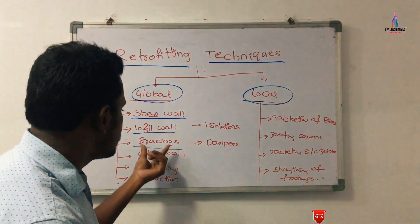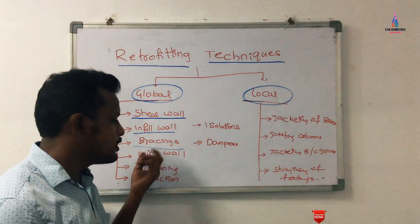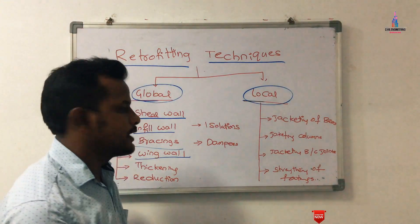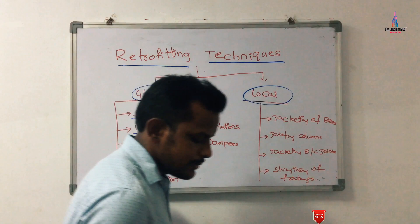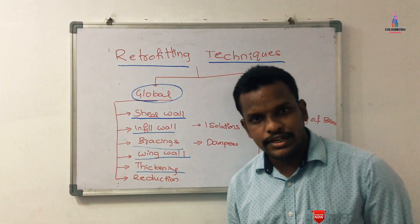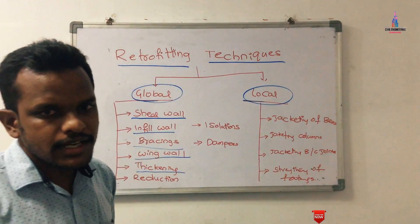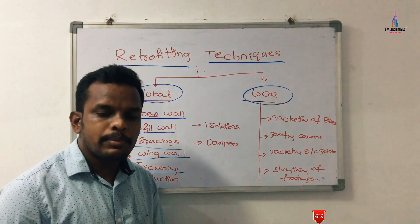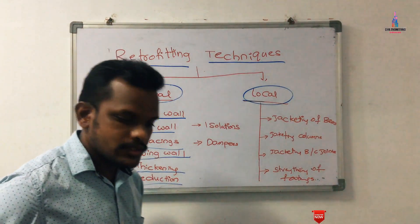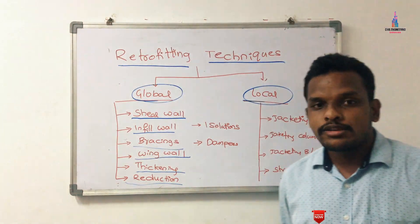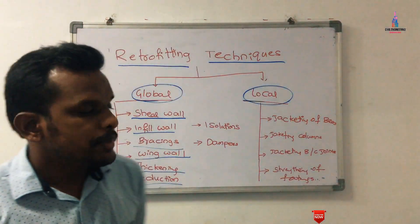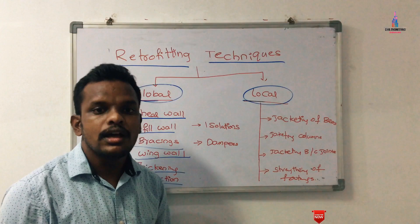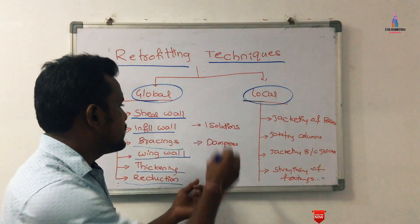The fourth global technique is the wing wall system, which is an external wall provided to decrease the deflection of the building. Fifth is thickening — if a member does not meet design requirements, we add additional section to increase its respective properties. Sixth is reduction — if the properties of the structure are higher than the requirement, the reduction process is applied.